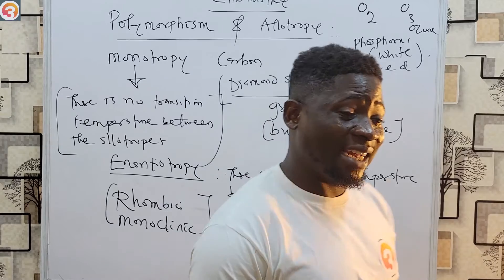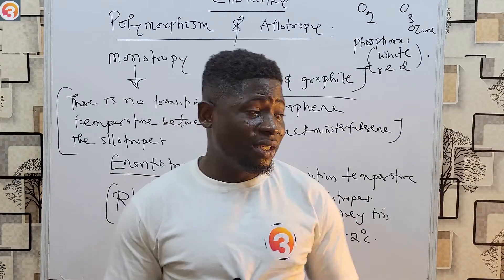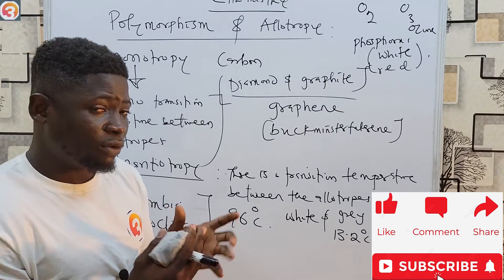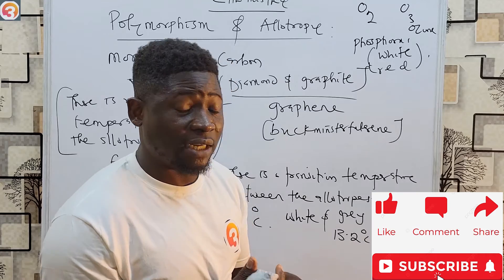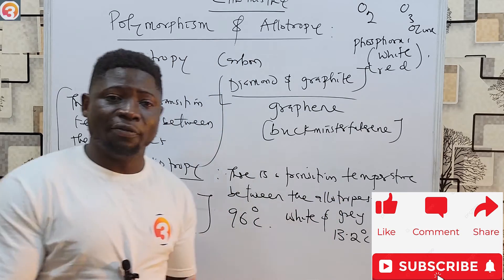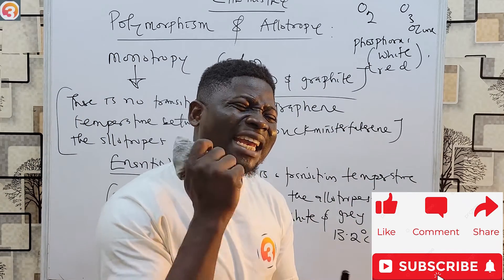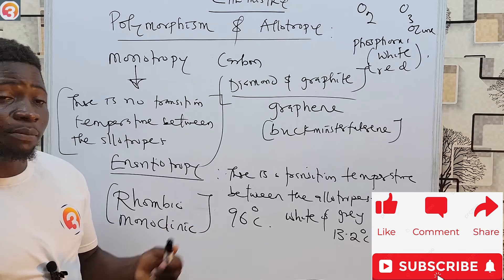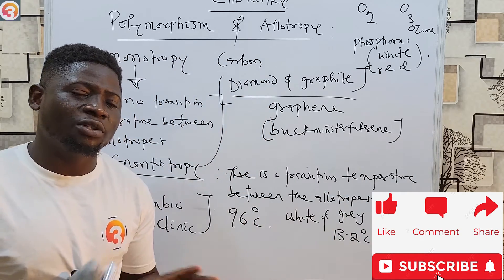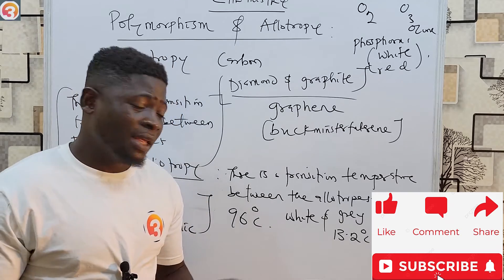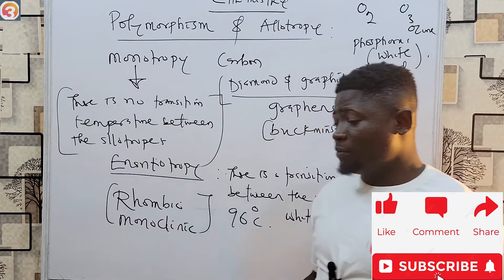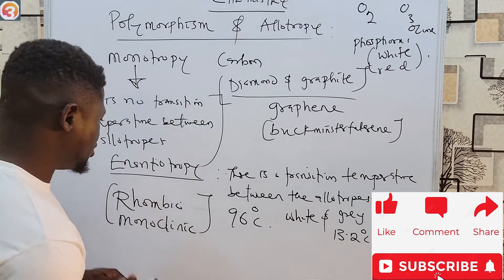To revise: polymorphism is the existence of different forms of a substance in the same physical state — example: silica with quartz, tridymite, and cristobalite as its crystalline forms. Allotropy is the existence of different forms of an element in the same physical state. There are two types: monotropy, with no transition temperature between allotropes, and enantiotropy, where there is a transition temperature. Remember: rhombic and monoclinic sulfur have a transition temperature of 96 degrees Celsius.